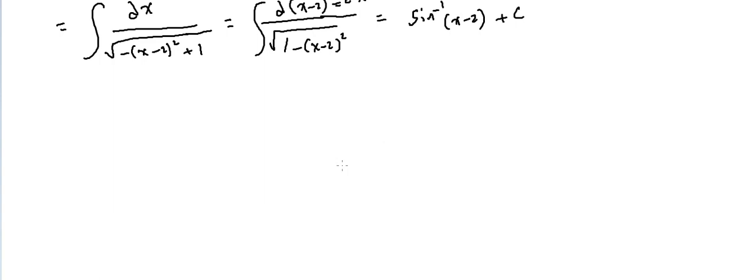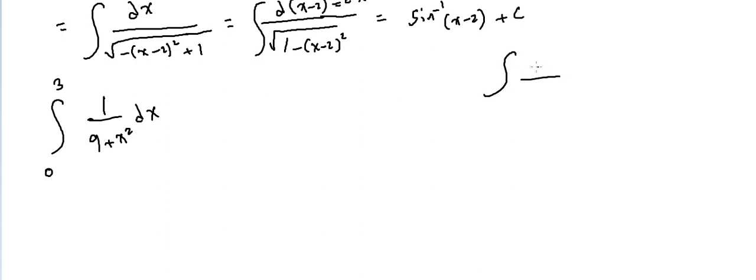Let's do Example 3, page 61. It's a definite integral from 0 to 3 of 1/(9 + x²) dx. The rule for this form is: integral of du over (1 + u²) equals tangent inverse of u plus C.